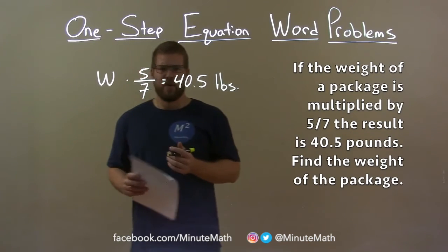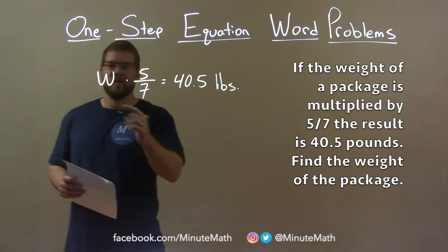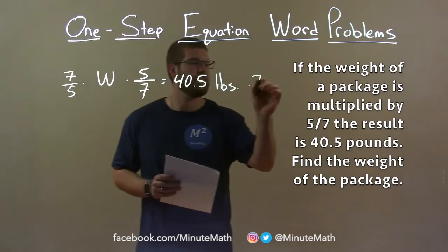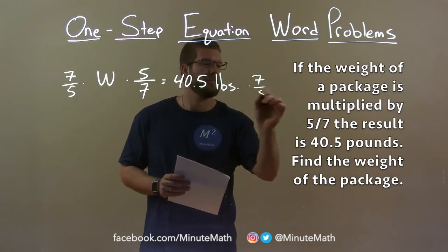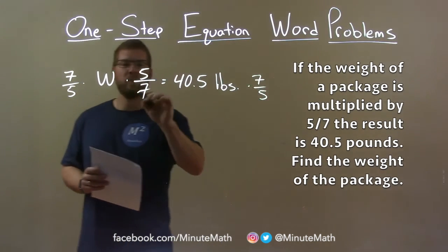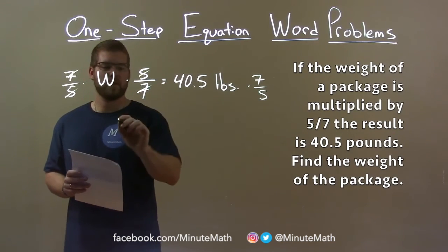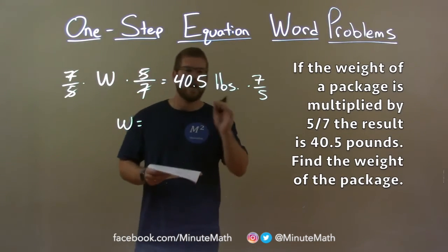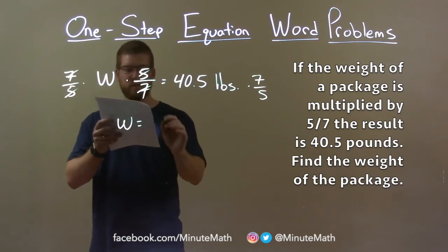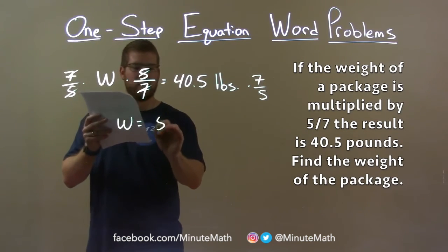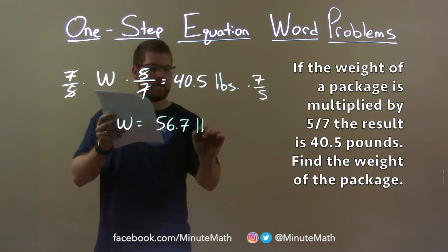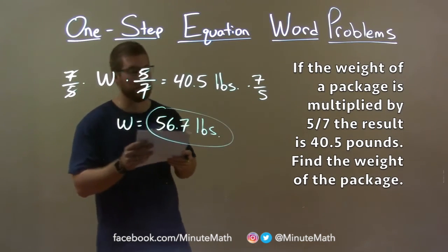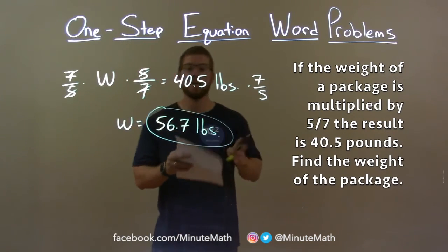W is being multiplied by 5/7, so to eliminate that, multiply both sides by the reciprocal, 7/5. The 7s cancel and the 5s cancel, giving W by itself. 40.5 times 7/5 comes out to be 56.7 pounds — our final answer.